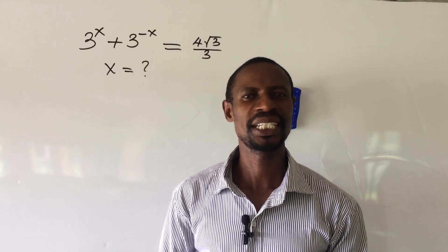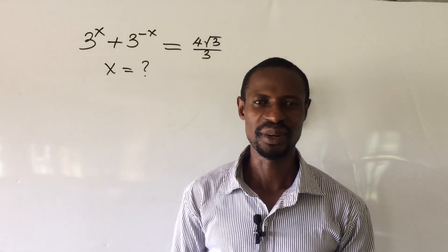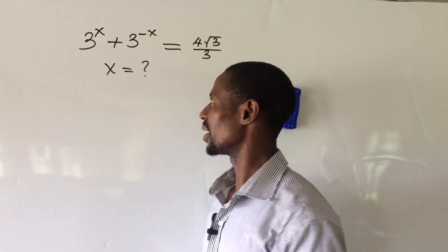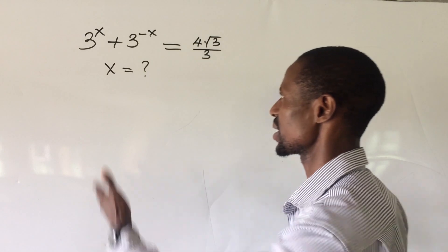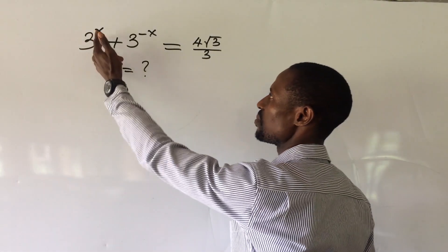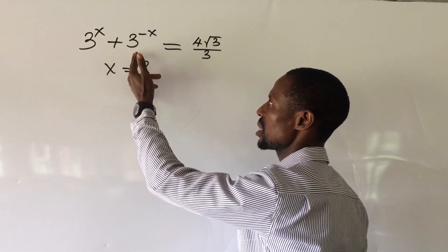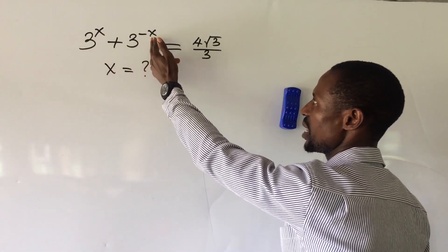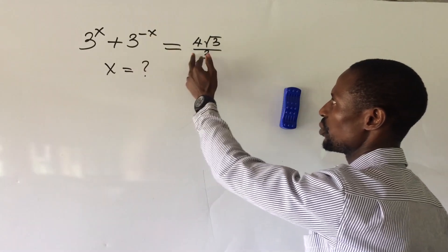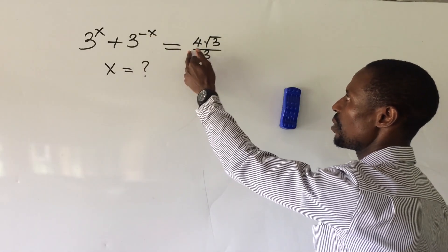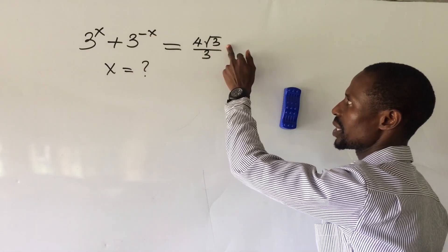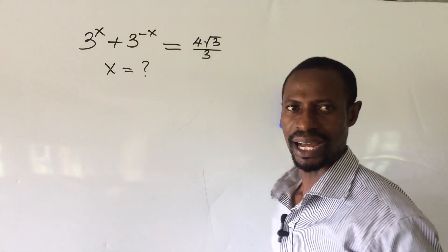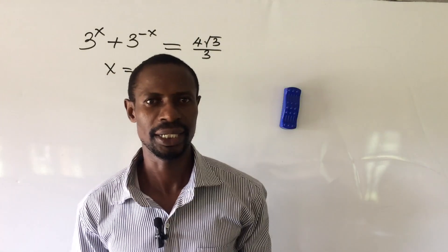Welcome everyone to my channel. Today we have a challenge on the board. The question says: 3 to the power of x plus 3 to the power of minus x equals 4 root 3 all over 3. What would be the value of x?